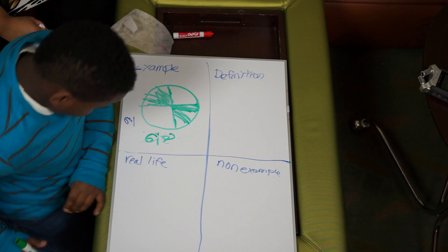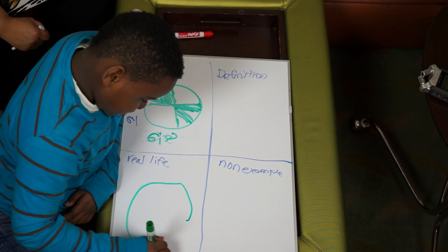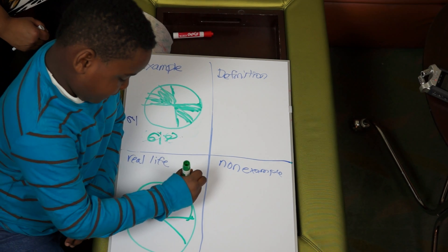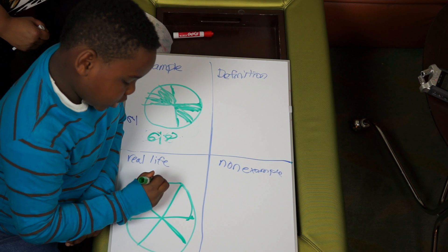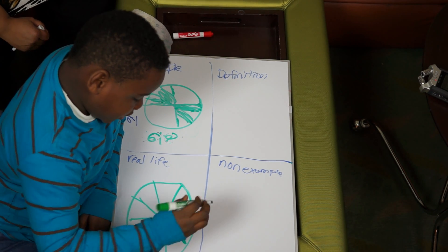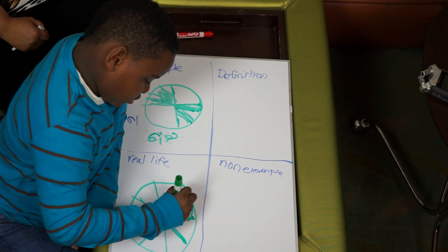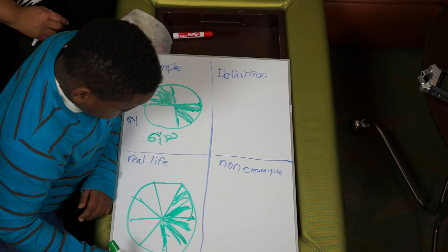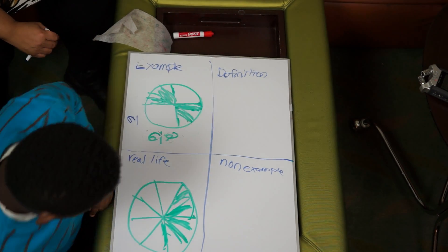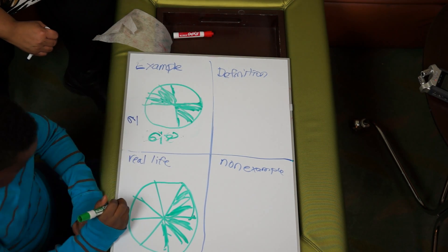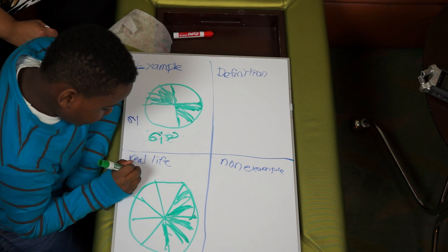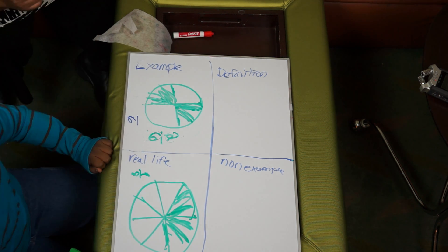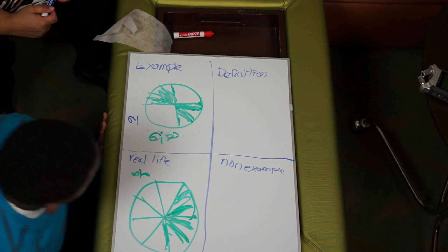Can you give me another real-life example and tell me the story that goes with it? Okay, there were eight pieces of pepperoni pizza. Two people ate four pieces. So how much is left? The fraction would be four over eight — four-eighths. Very good.